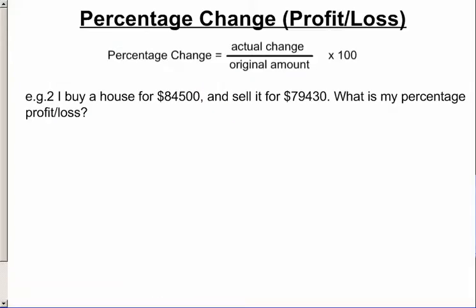So let's look at a second example. We've got our formula at the top there. Buy a house at $84,500 and sell it for $79,430. What is my percentage profit or loss? In this case we're not told. We need to work out which one of those two words it is that we need to use.